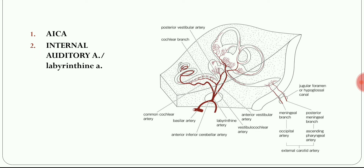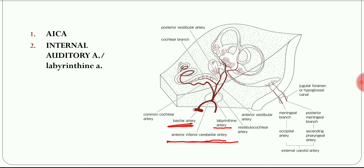The labyrinthine artery is a long and slender branch that arises either directly from the basilar artery or from the anterior inferior cerebellar artery. It runs along with the eighth cranial nerve, enters the internal auditory meatus, and supplies the inner ear. The labyrinthine artery is one of the end arteries.